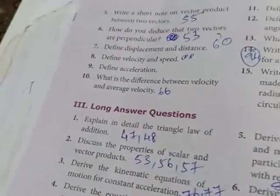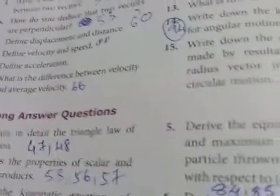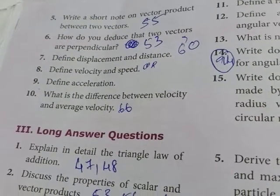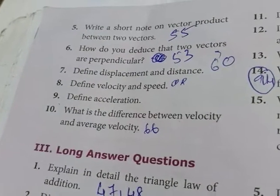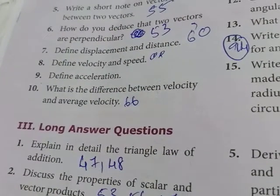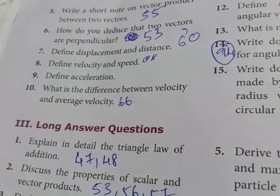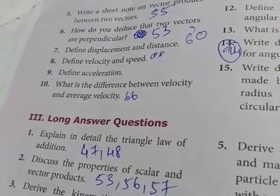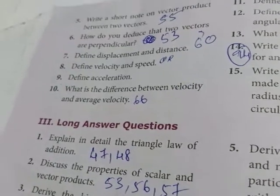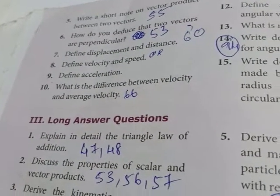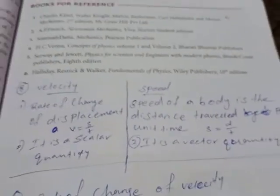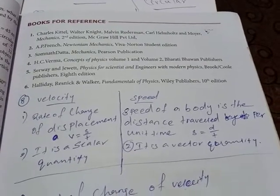Question number 8: define velocity and speed. Velocity is the rate of change of displacement; speed is the rate of change of distance, or the actual distance travelled divided by time. Velocity is a vector quantity; speed is a scalar quantity. Question number 9: define acceleration — rate of change of velocity, a = (V − U)/T. Unit: metres per second squared.